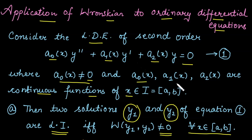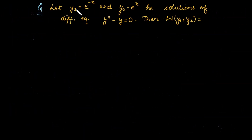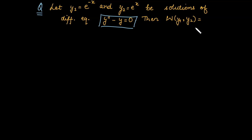This holds provided a0(x), a1(x), a2(x) are all continuous functions for every value of x. Let's understand this result with the help of an example. It is given that y1 = e^(-x) and y2 = e^x are solutions of a differential equation. We need to calculate the Wronskian of y1 and y2.